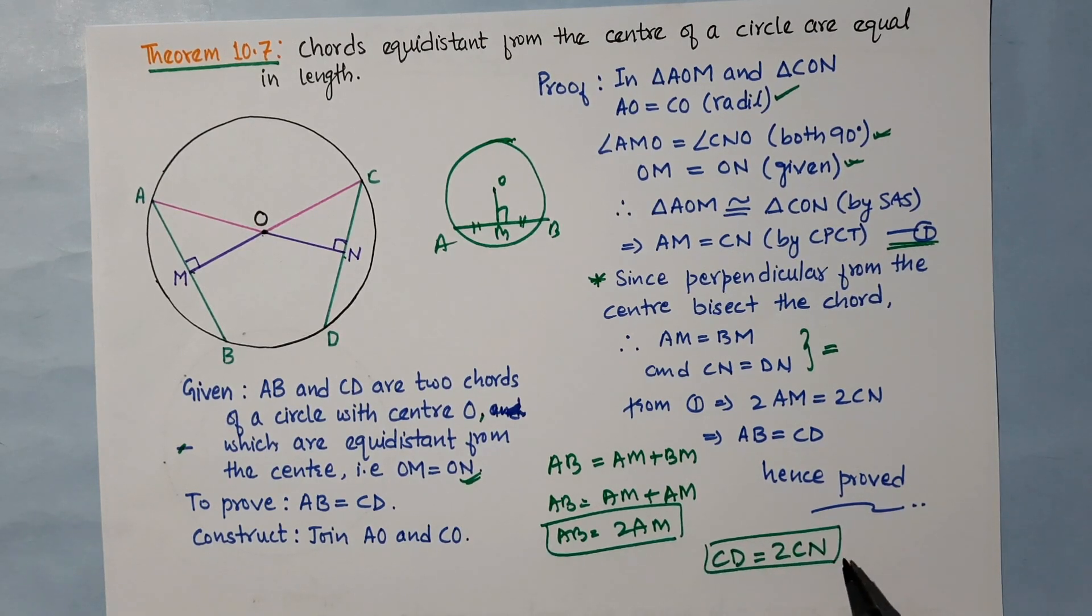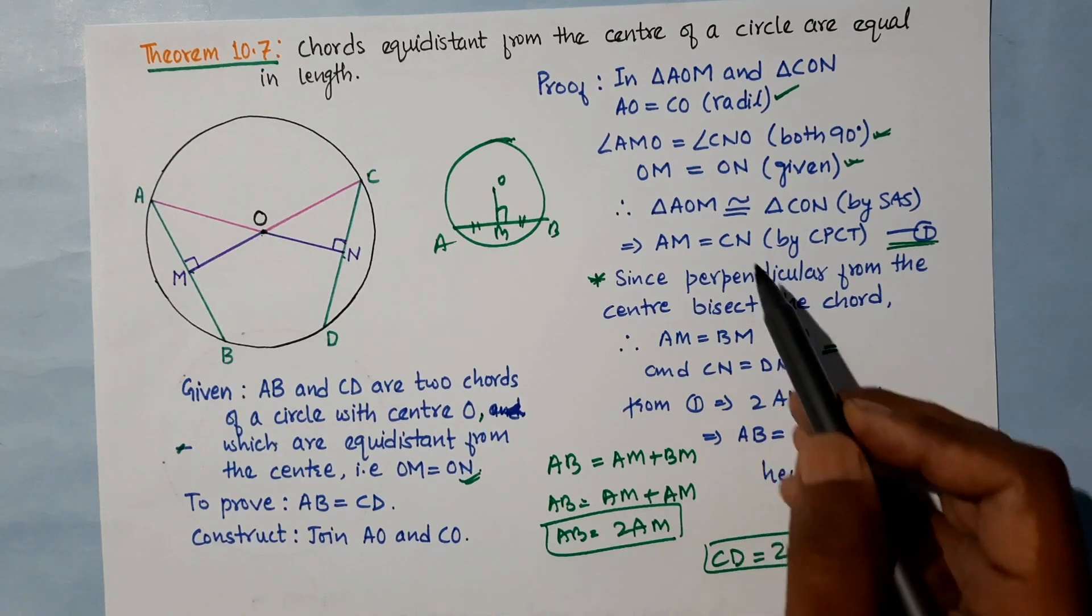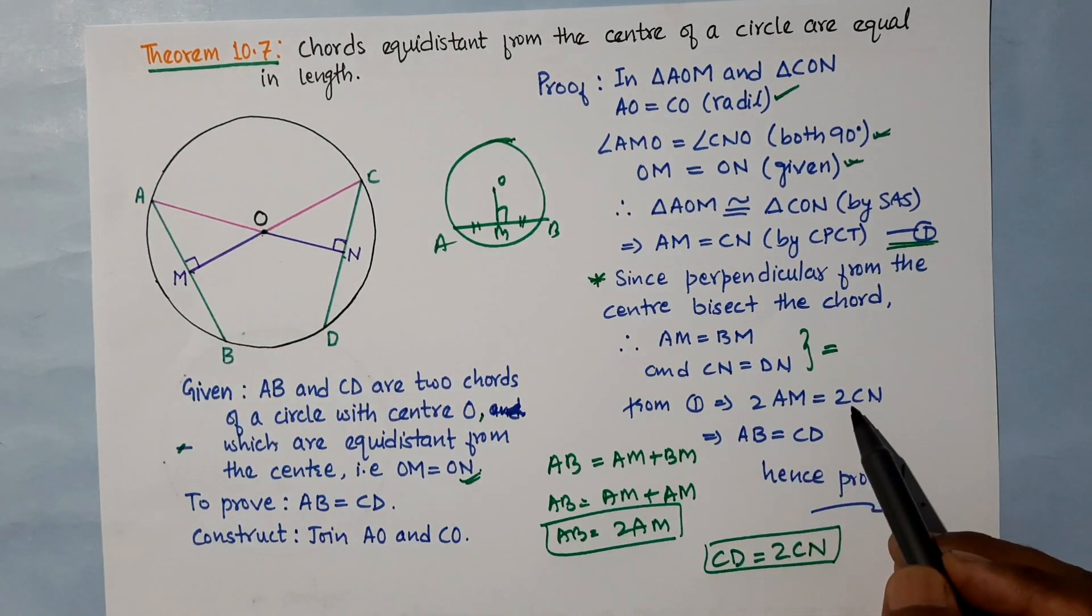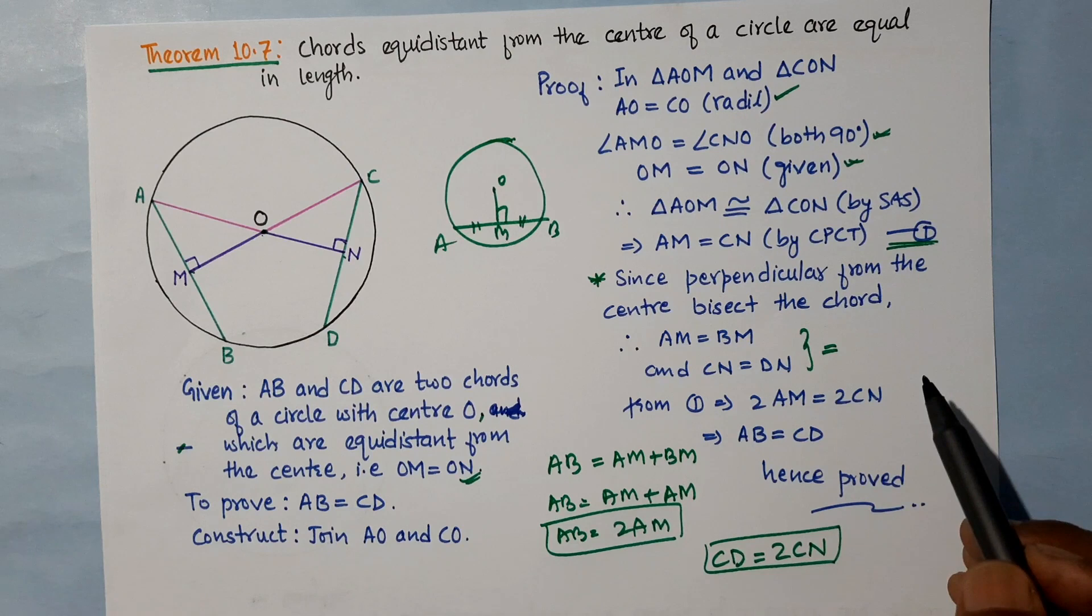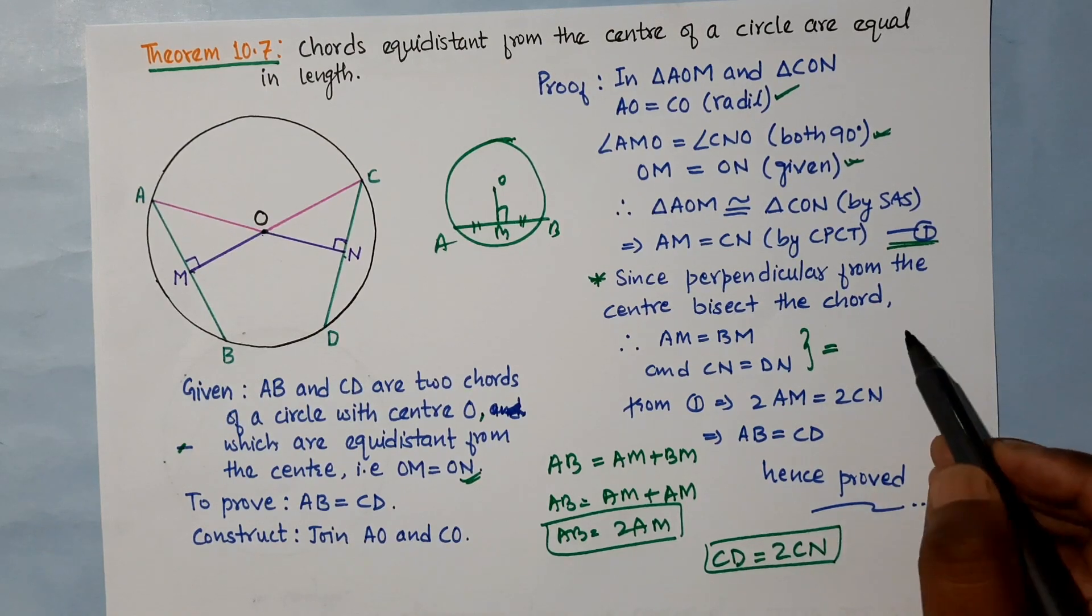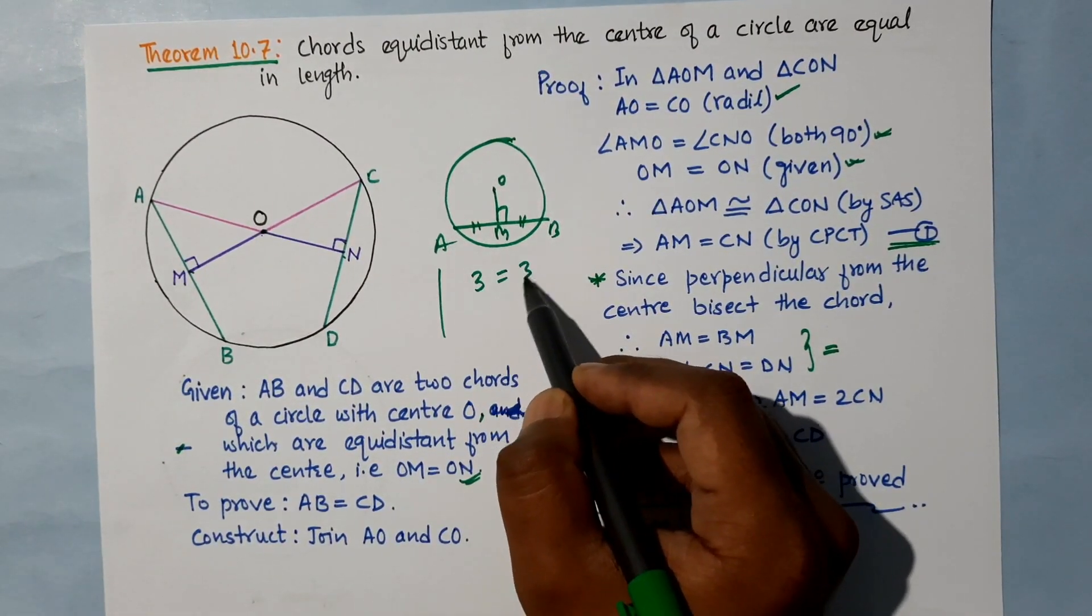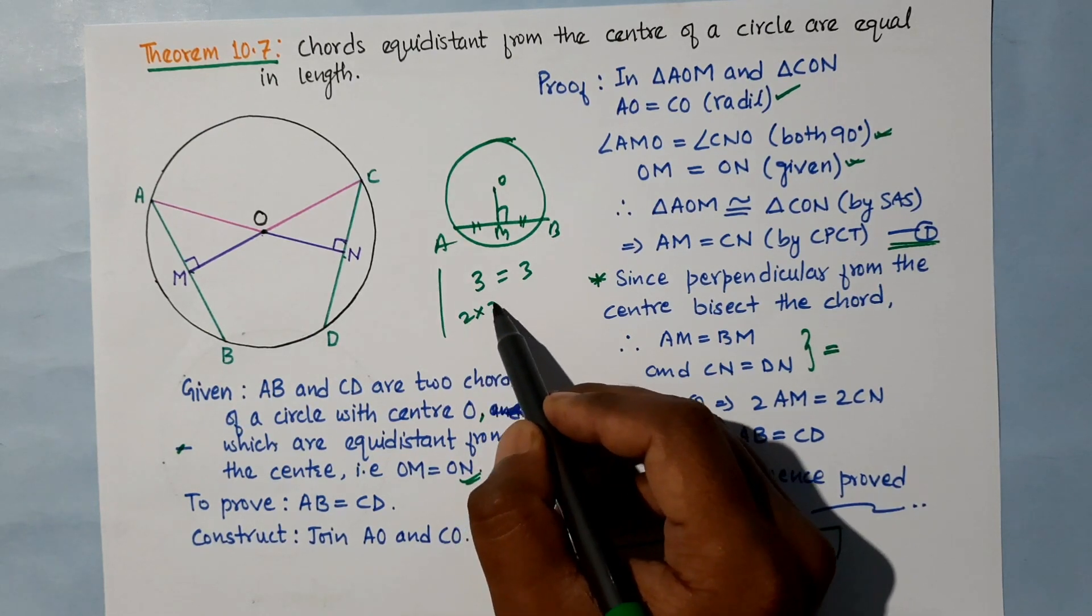Since AM is equal to CN, and we multiply both sides by 2, the products are also equal. When we multiply both sides by 2, we get 2AM equal to 2CN.